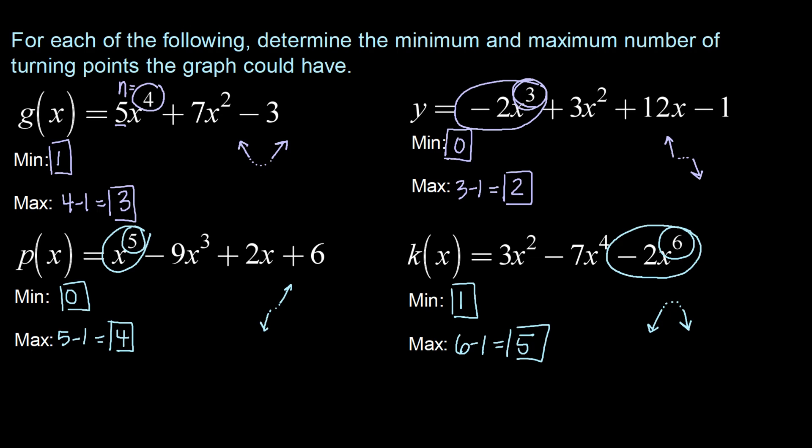Now one important thing to note is that this is just a range of possibilities. It is not to say that we will on g of x have one or three. We might have any number in between. We could have one, two, or three. Or p of x we could have any number between zero and four. This is just the minimum and maximum possible.